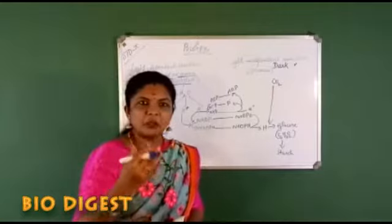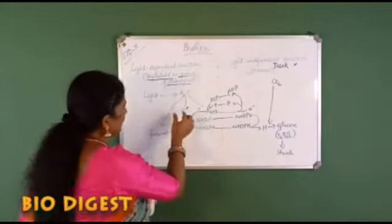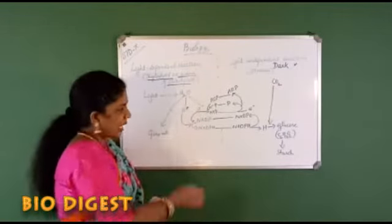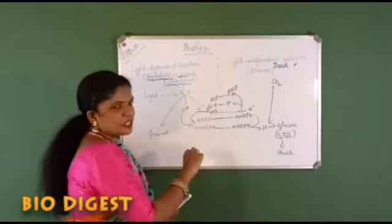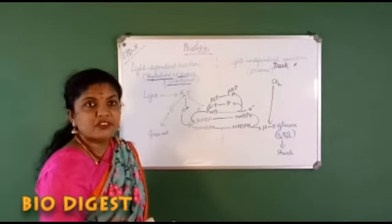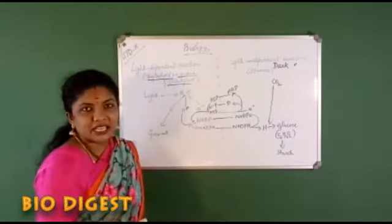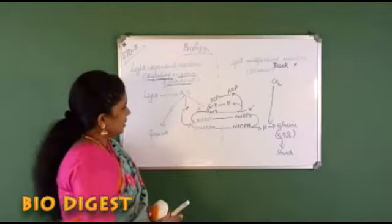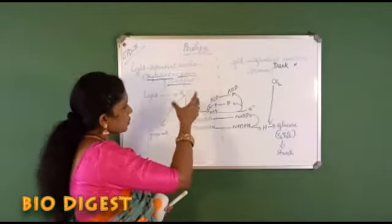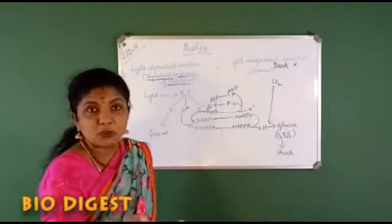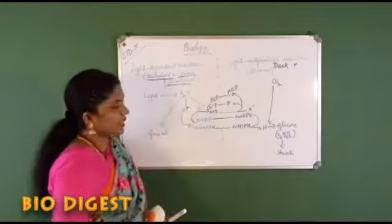The oxygen formed by the splitting of the water molecule is actually given out. The hydrogen ions formed by the splitting of water molecules will be accepted by NADP, converting it into NADPH. The electrons are also used for converting ADP into the energy-rich compound ATP.